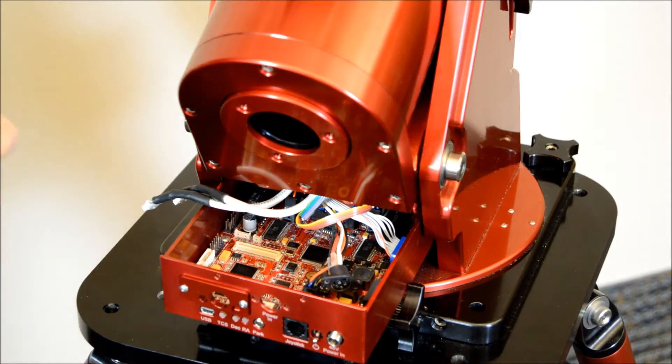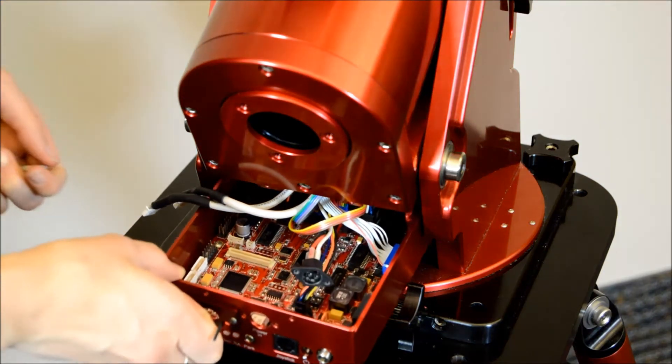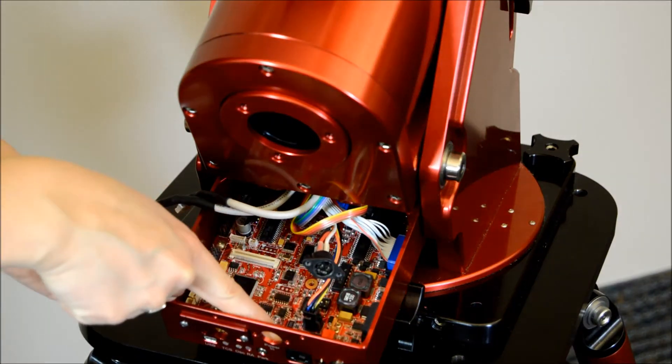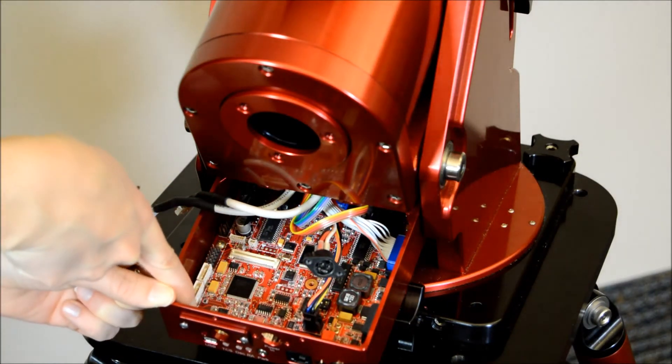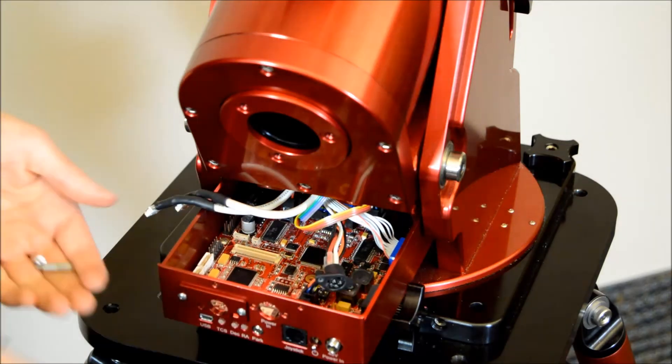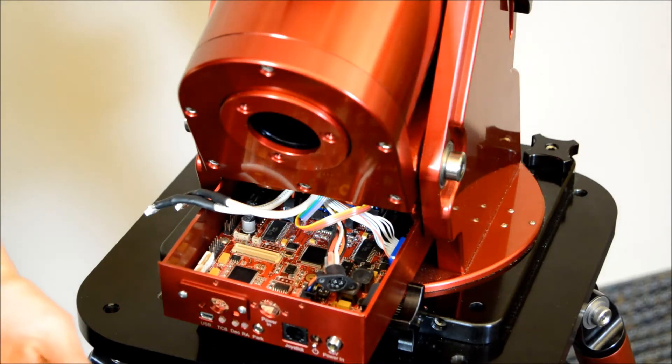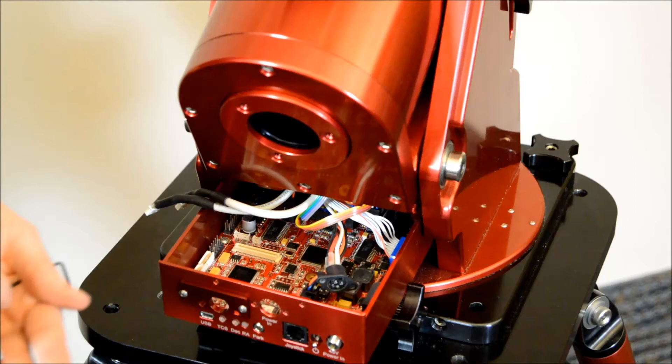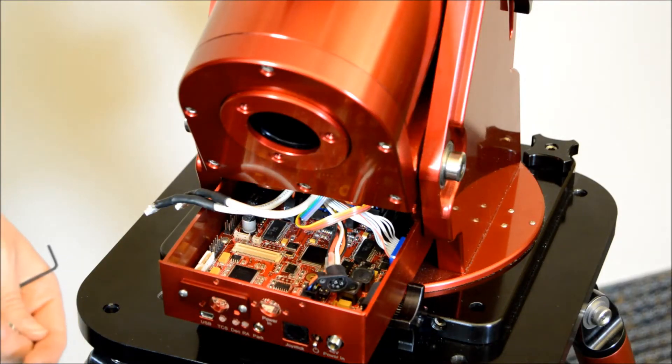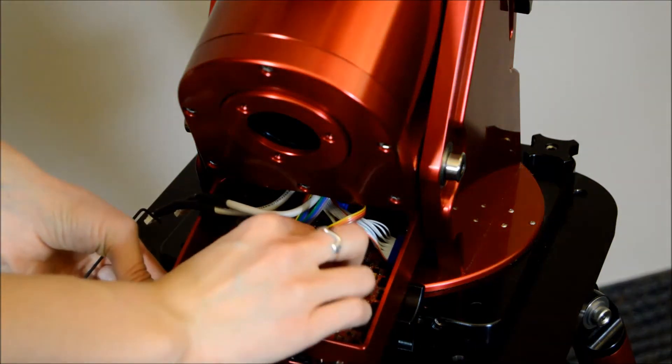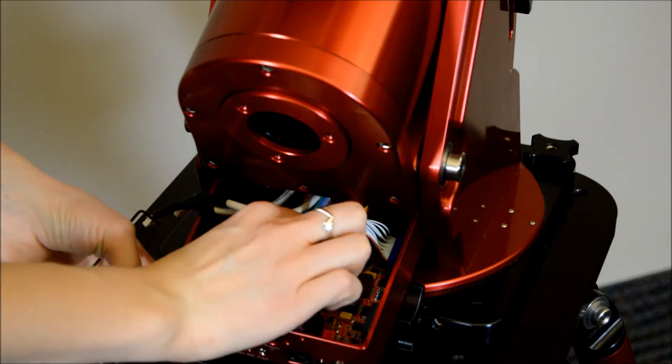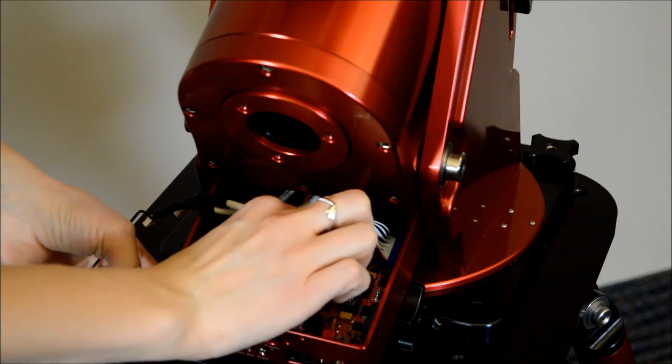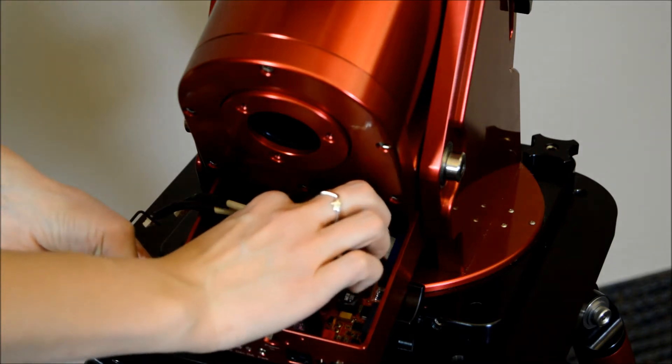Okay, so before you can install the actual board, you have to remove these three 3/16 4-40 button heads and replace them with these 4-40 by 5/16 standoffs. I used the first one and put it in the back here because it's fairly easy to get to. You just have to screw them all the way down until they bottom out. They don't need to be super tight.